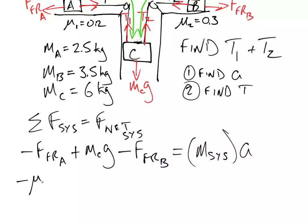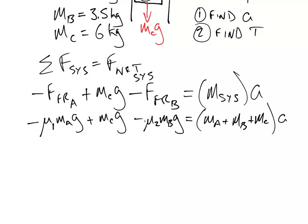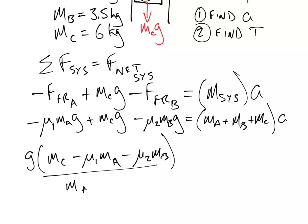So the equation is: negative mu1 times MA times G, plus MC times G, minus mu2 times MB times G, all divided by the total mass of all three, equals acceleration. Factoring out G gives: G times (MC minus mu1 times MA minus mu2 times MB) divided by (MA plus MB plus MC).